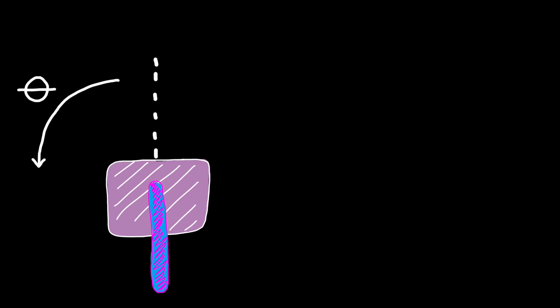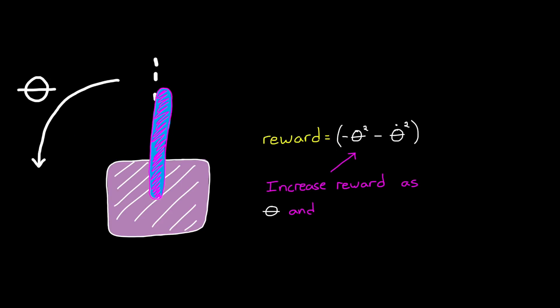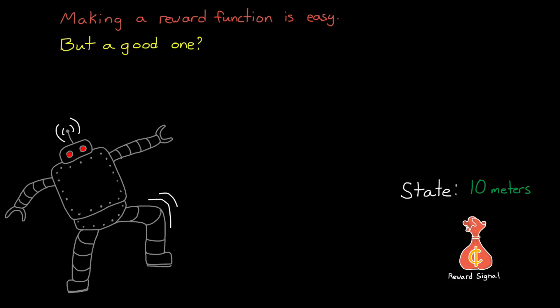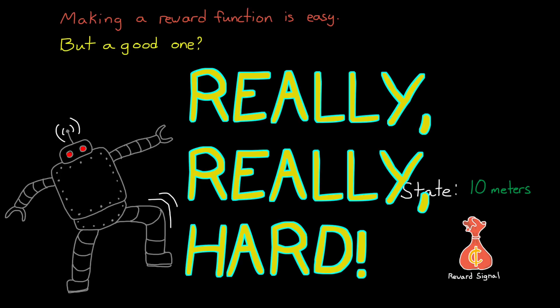Do you want to get an inverted pendulum to stand upright? Then maybe give more rewards to your agent as the angle from vertical gets smaller. Want to take control or effort into account? Then subtract rewards as actuator use increases. Want to encourage a robot to walk across the floor? Then give the agent a reward when it reaches some state that's far away. Now, with that being said, making a reward function is easy. It can be pretty much any function you can think of. Making a good reward function, on the other hand, is really, really hard.